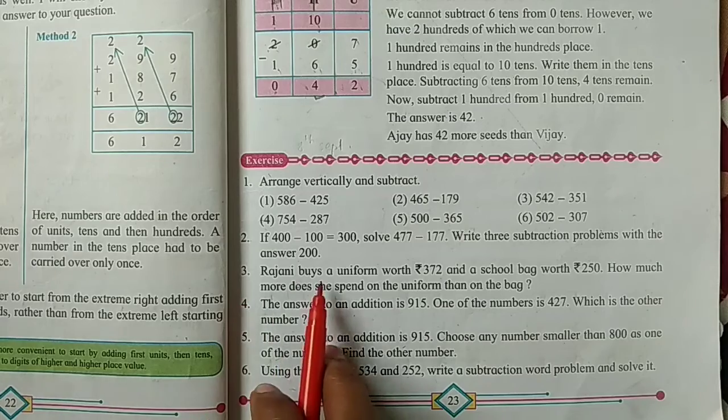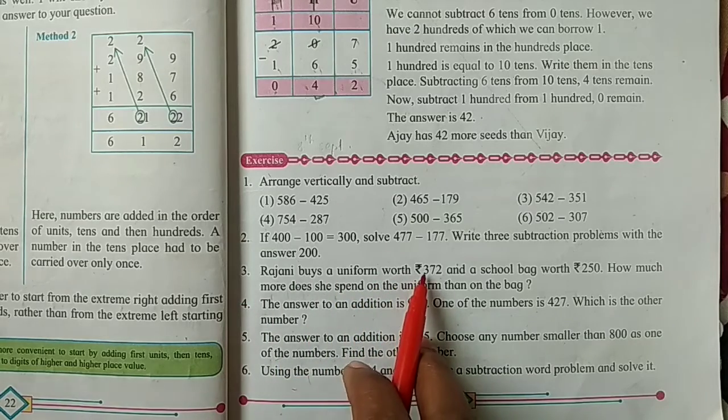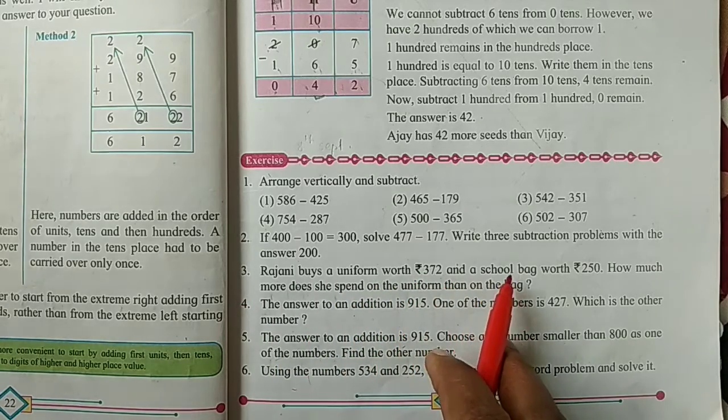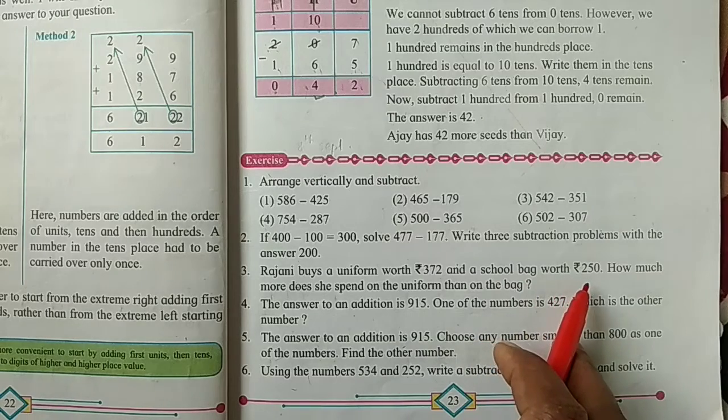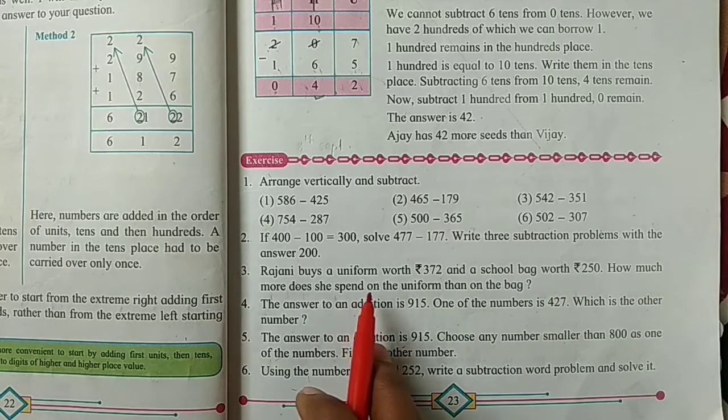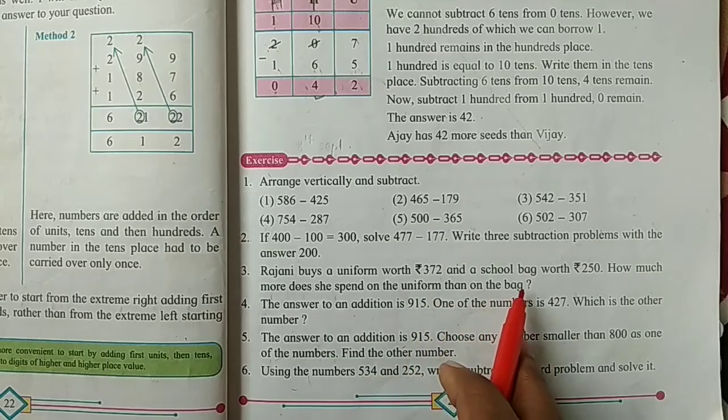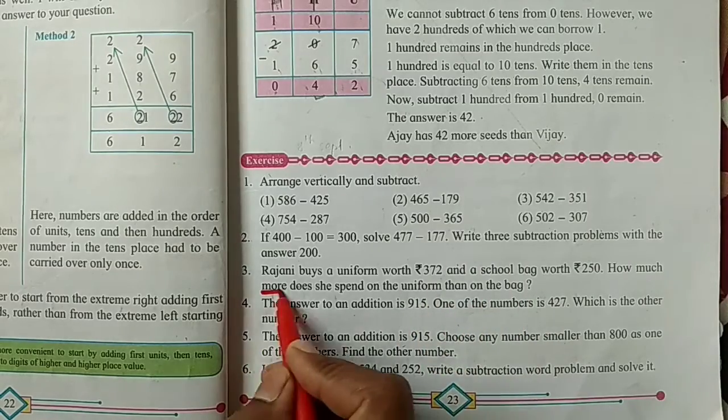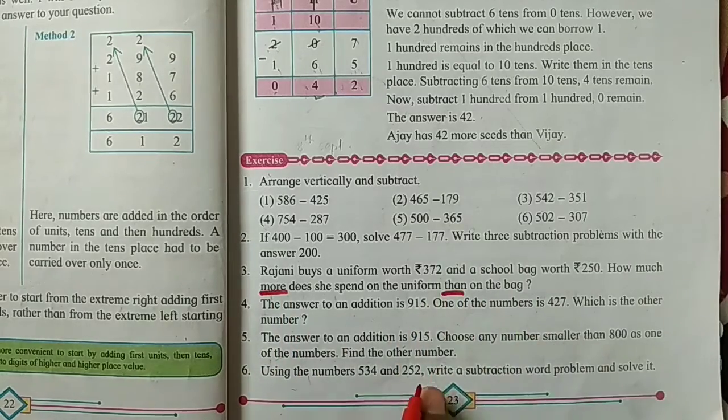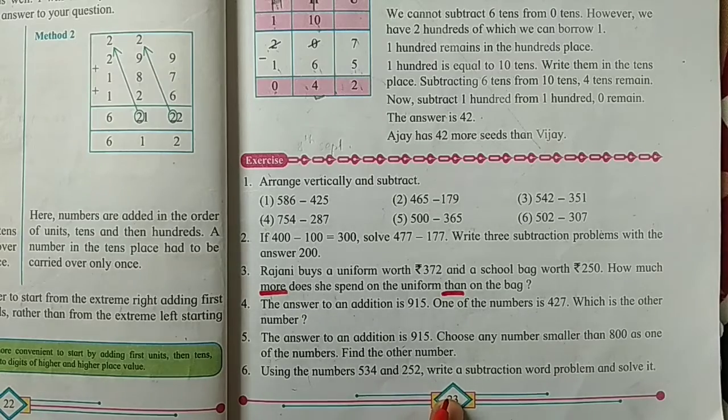Now question number 3. Rajni buys a uniform for rupees 372 and a school bag for rupees 250. How much more does she spend on the uniform than on the bag? Which word having here? More and than. So this is the subtraction word problem. Let's solve this.